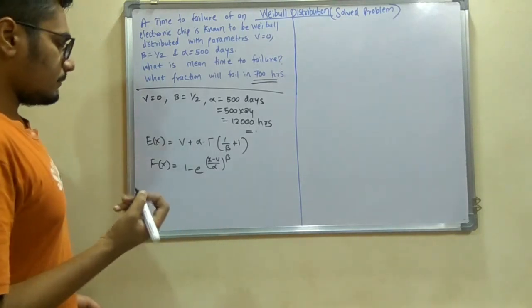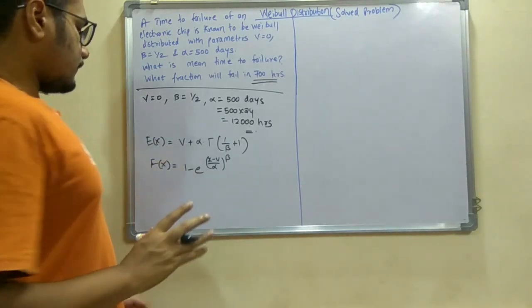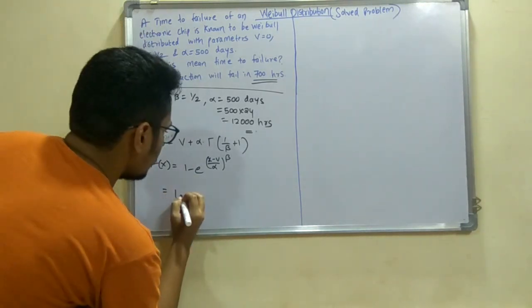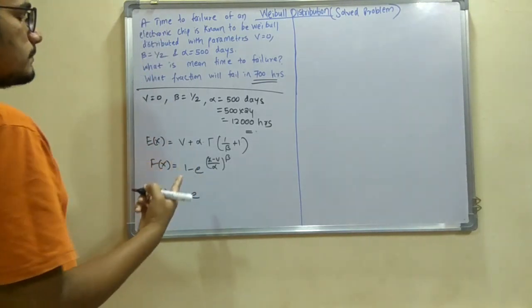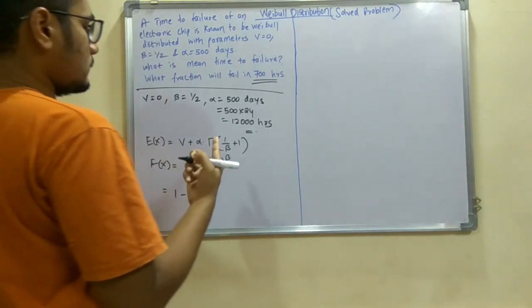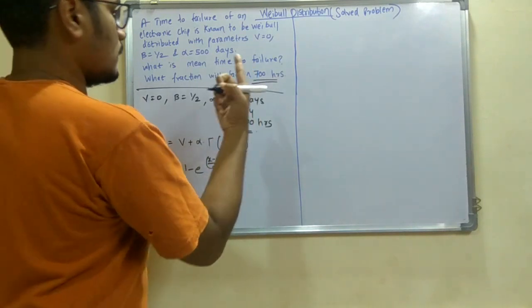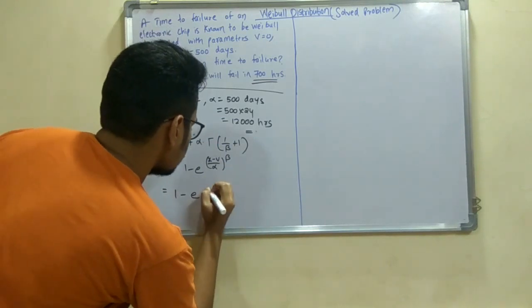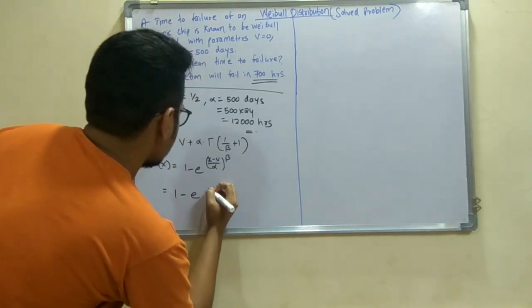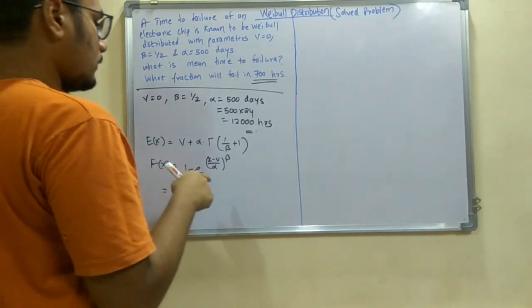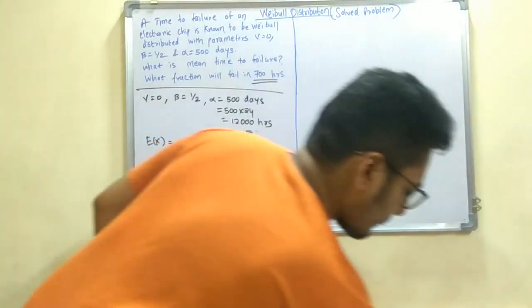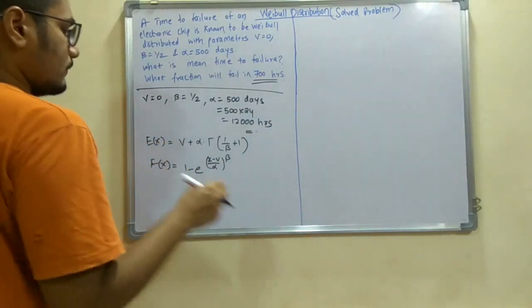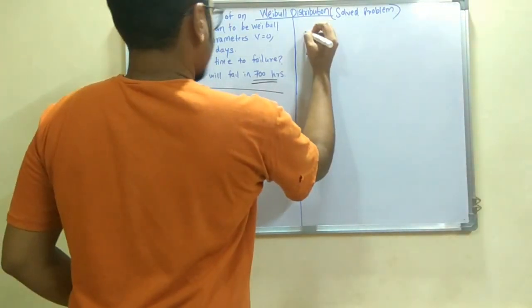So first of all, for calculating this, we will first go with F(x). So putting the values here, that is we have 1 minus e raised to minus x minus v. So x in this case would be 700... Okay, so first we need to calculate this x. For having this x we need to calculate the mean, so we need to calculate E(x).